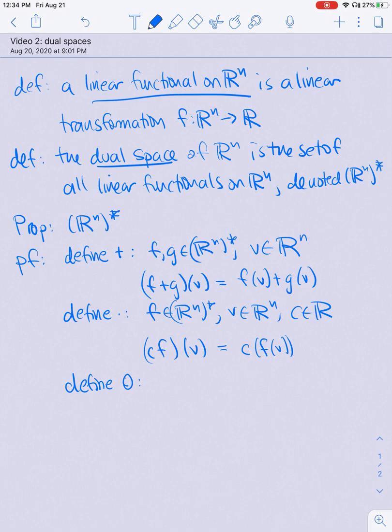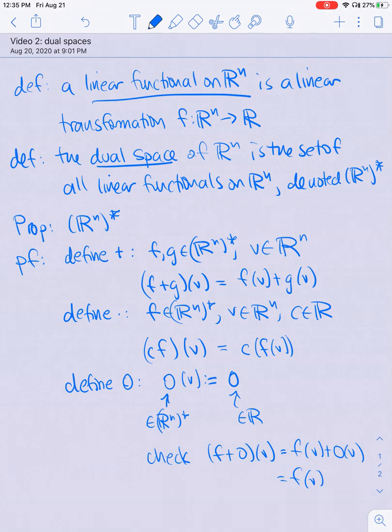Now I need to define a zero. And zero, I need to define as an element of Rⁿ star. So it should be some linear functional, which when I plug in a vector from Rⁿ, I get a real number. And when I add the linear functional zero to any other linear functional, I get the original linear functional back again. So the only thing I could do is define zero as a linear functional to just take any vector in Rⁿ to zero. So this is an element of R. So then I can check that F plus zero applied to V is just equal to F of V plus zero of V, which is equal to F of V plus zero, which is just equal to F of V. So zero is an additive identity.